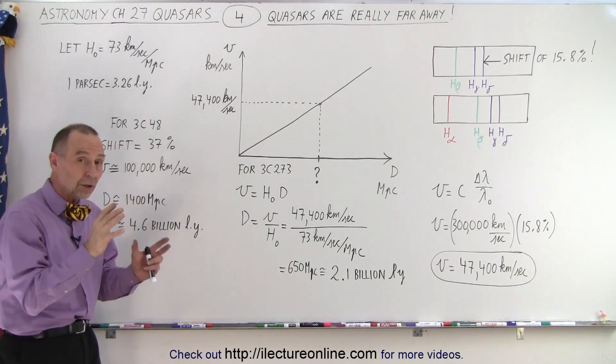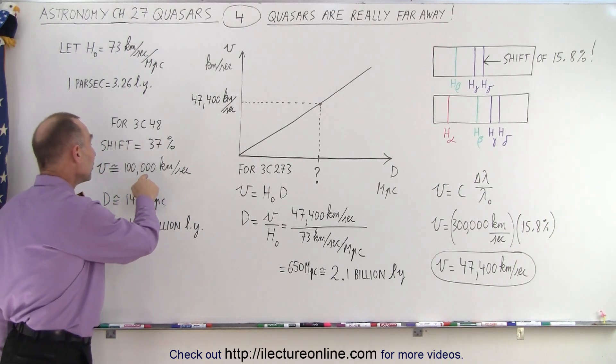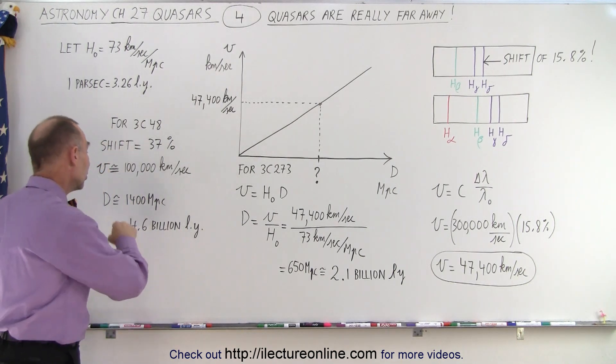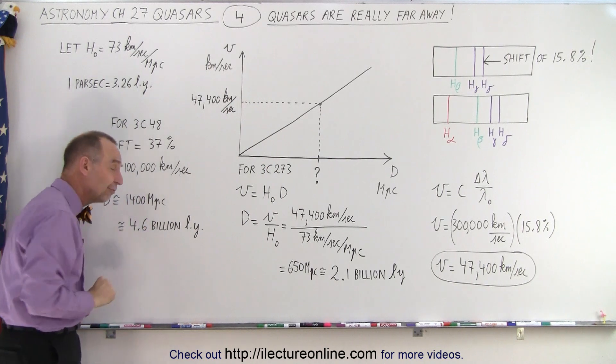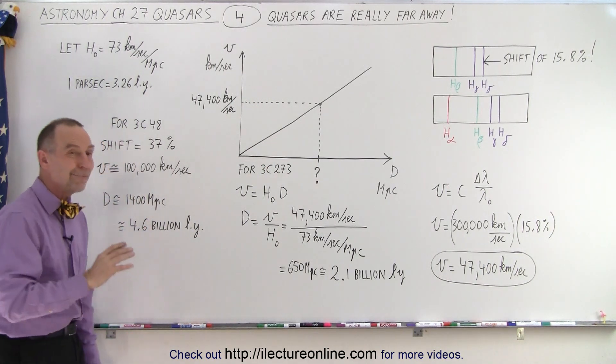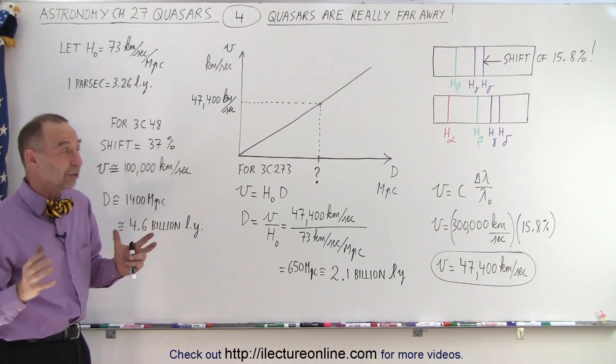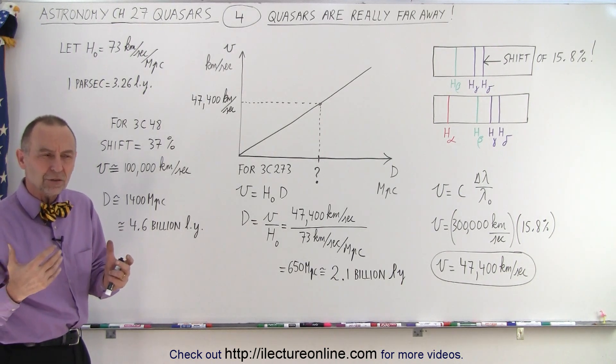That object that we're looking at, that was beaming various powerful radio signals to us, was moving away from us at about one-third the speed of light. We equated that to the distance, again using the Hubble law. We found that that was about 1400 megaparsecs away, or about 4.6 billion light years. Imagine that, almost 5 billion light years away. And those are very powerful radio signals from 5 billion light years.